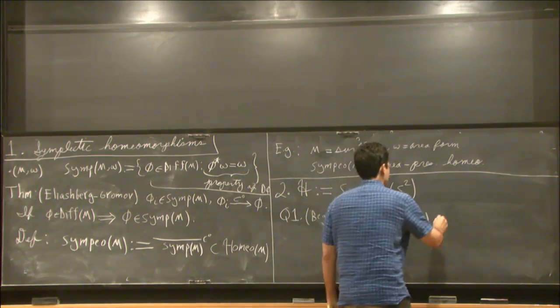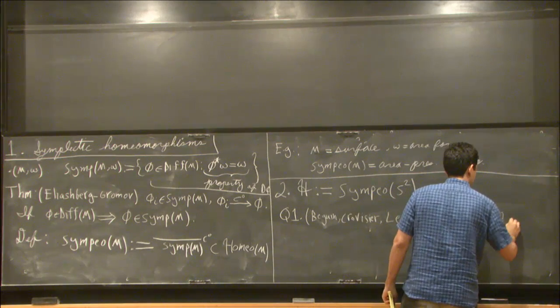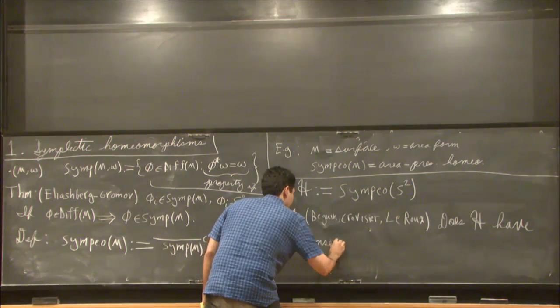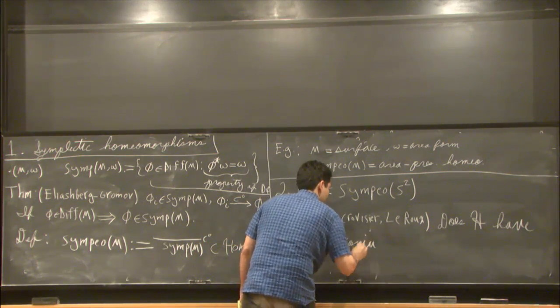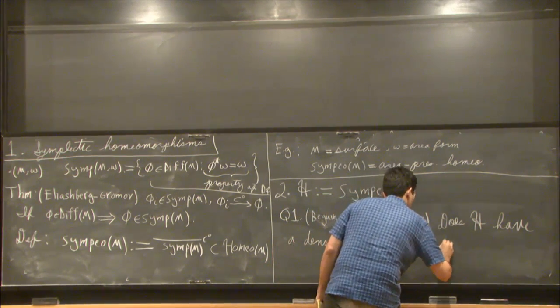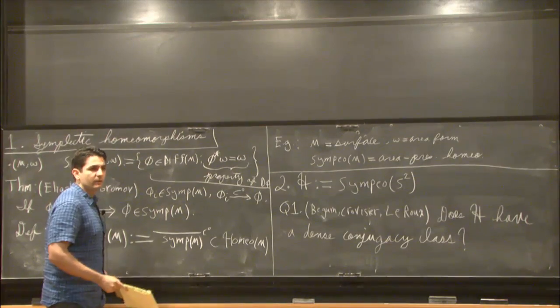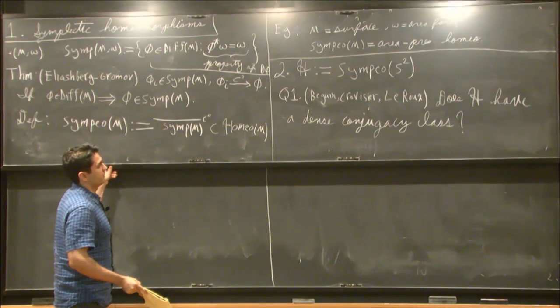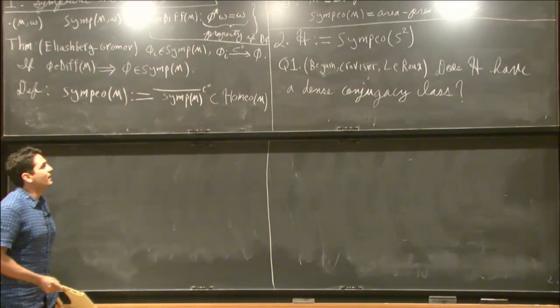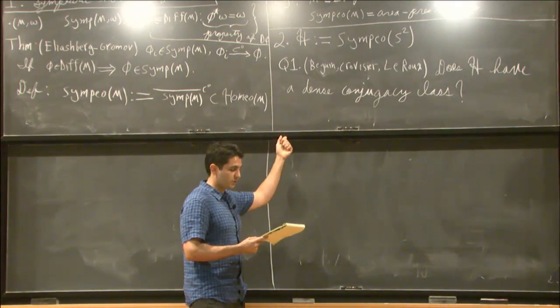So three dynamicists, and they asked this question, does the group of area-preserving homeomorphisms of the sphere have a dense conjugacy class? So you can find a conjugacy class whose closure gives you everything. And so as I said, they arrived at this.